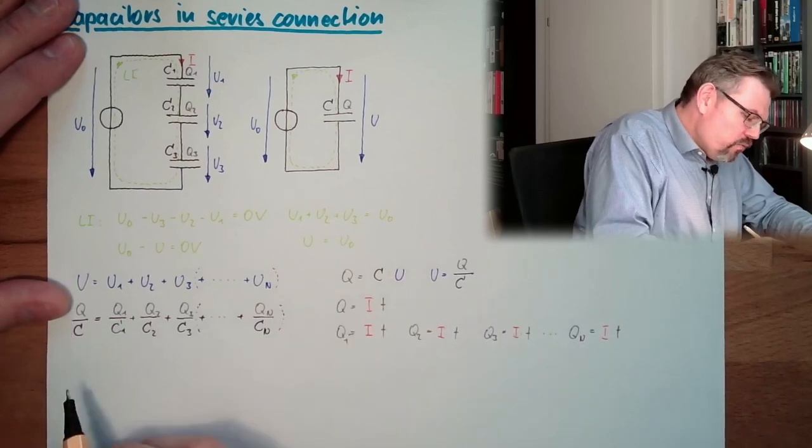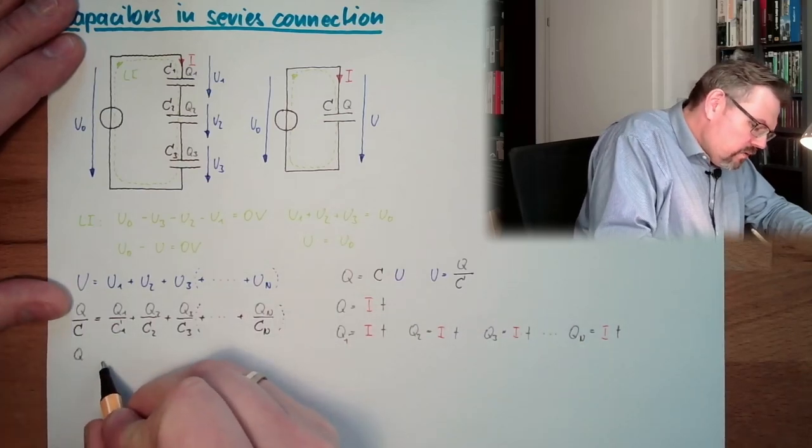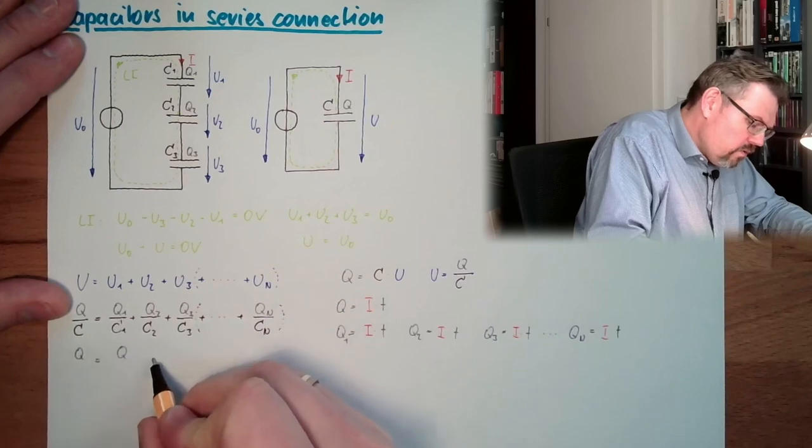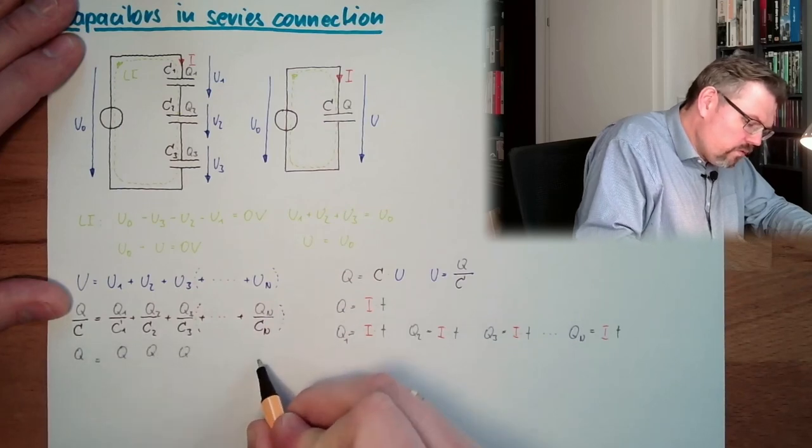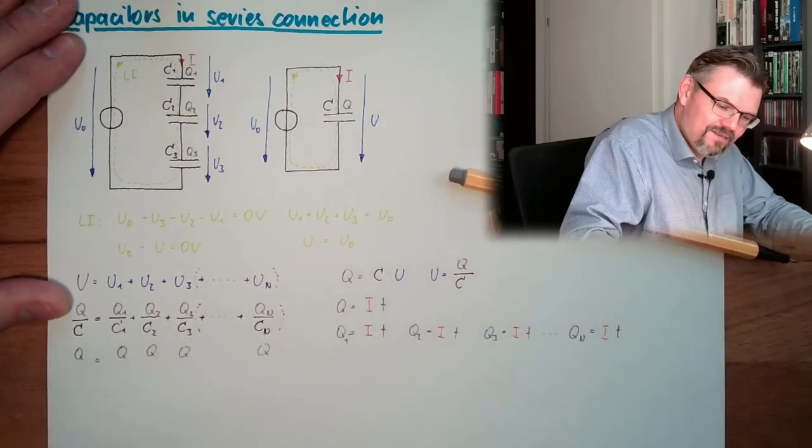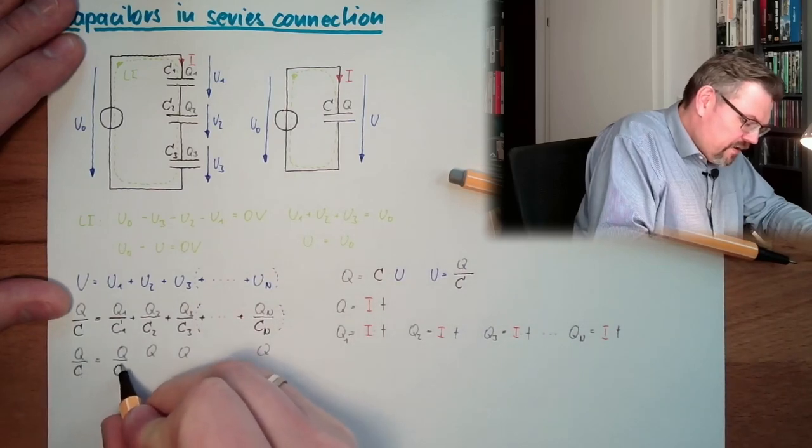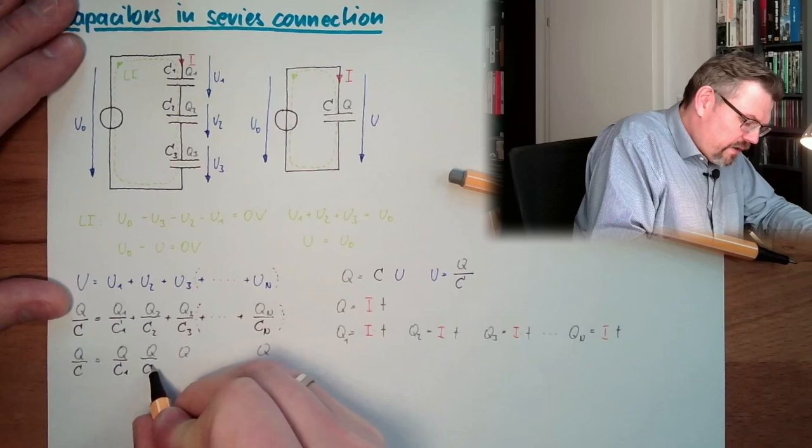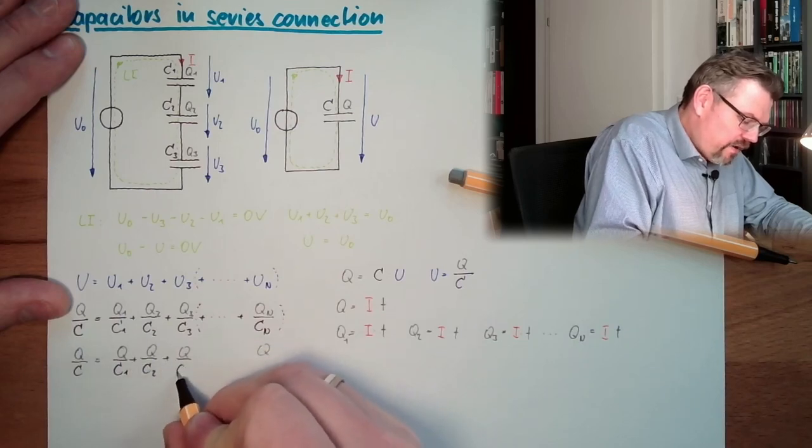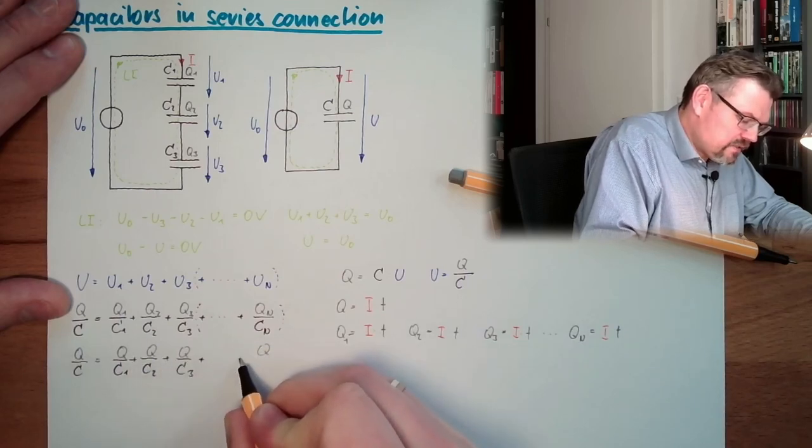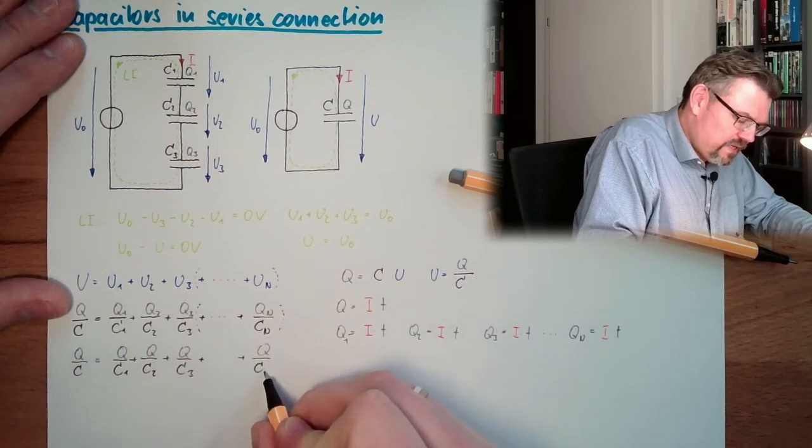So this indicates that all q's are the same. So actually, it's q1 equals q2 equals q3 equals qn equals q. Everything is the same. So we can write here q equals q, q, q, q, q, divided by c1, divided by c2, divided by c3, plus and divided by cn.